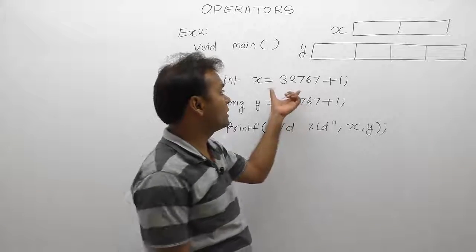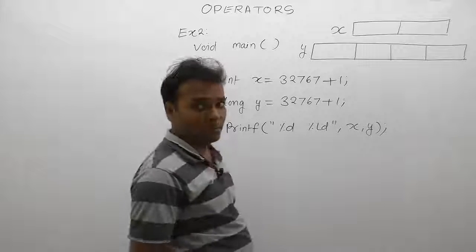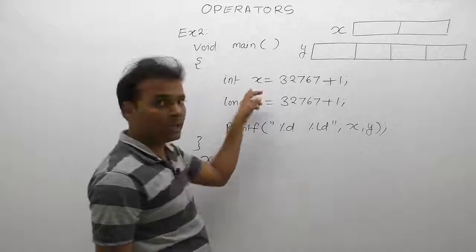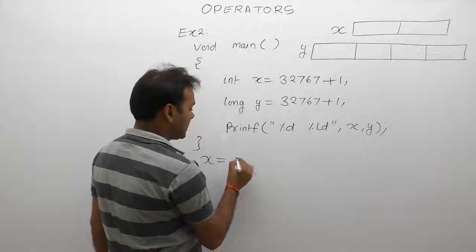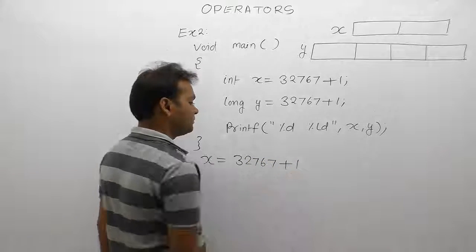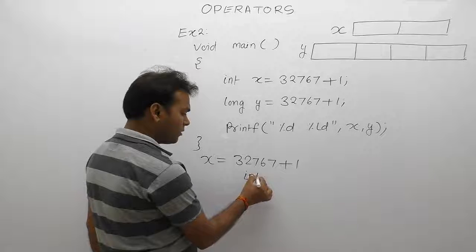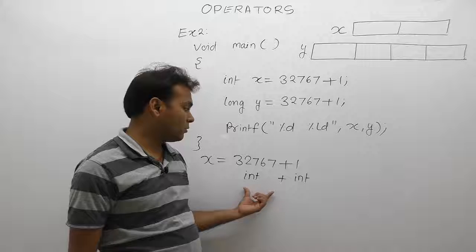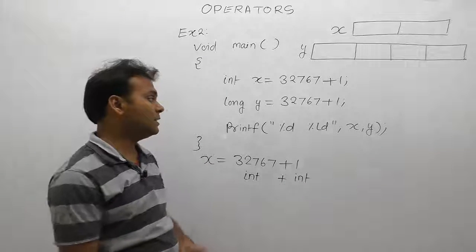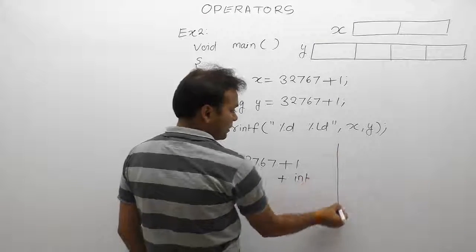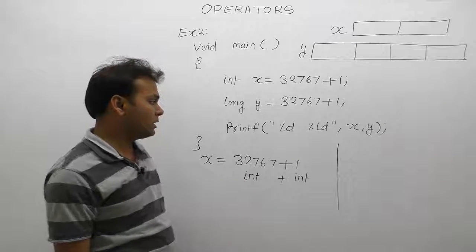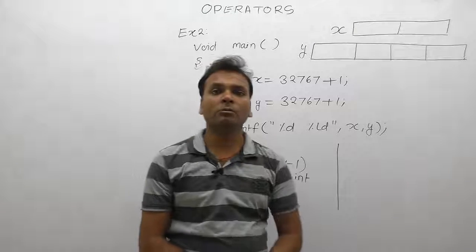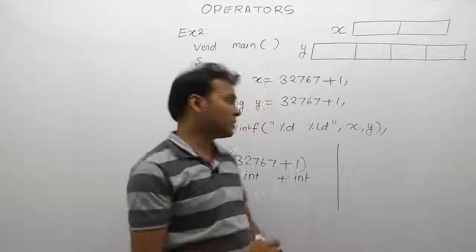Before assigning the value of x, we solve the expression step by step. First, memory is allocated for x and y according to their data types. For x: the expression is x = 3260 + 1. Here 3260 is an integer operand and 1 is also an integer, so the result type is also integer — meaning two bytes. Addition is performed according to integer operation rules.